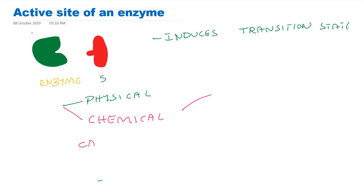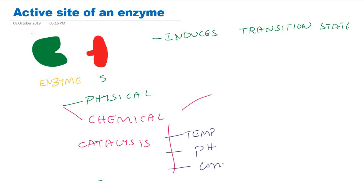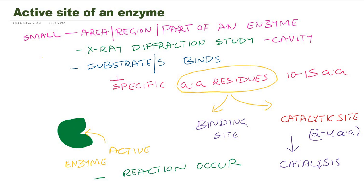The catalytic site depends upon many environmental factors like temperature, pH, and even the concentration of enzyme and substrate. Every enzyme has its own optimum temperature and pH. We will discuss these when we cover factors affecting enzyme activity.